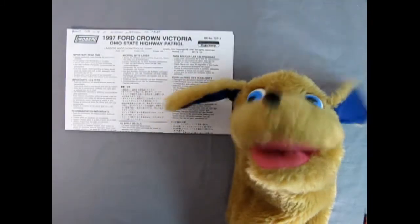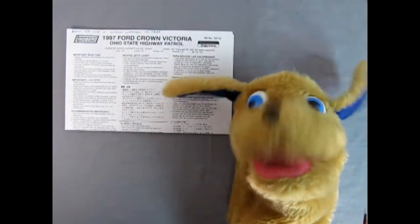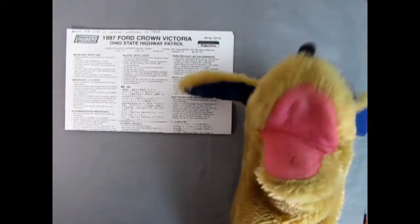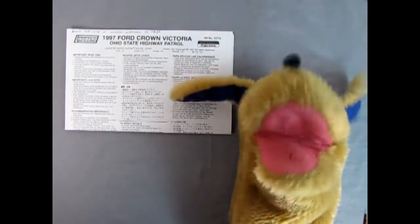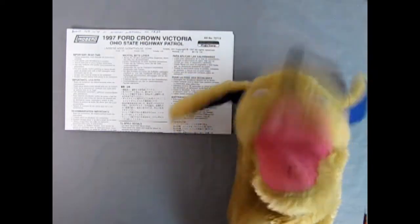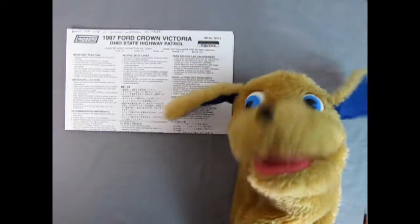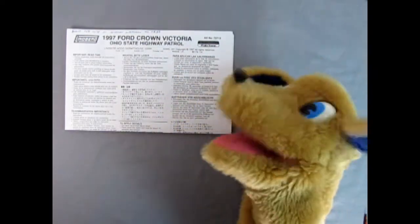Breaker 1-9, this is Danny the dog from the K9 unit. And today we're going to be looking at the 1997 Ford Crown Victoria Ohio State Patrol instruction sheet. That was a mouthful. So here it is. Let's take a look.